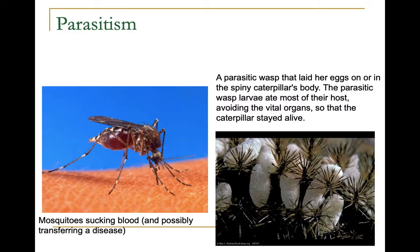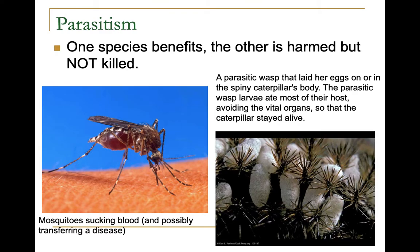Our last type of relationship is parasitism. Parasitism occurs when one species benefits and the other is harmed, but usually not killed — at least not right away. Common examples include mosquitoes and ticks. There's also a parasitic wasp that lays her eggs right against a caterpillar's skin — those white things are the wasp larvae, which gradually hatch and eat parts of the caterpillar for energy while avoiding the vital organs, keeping the caterpillar alive as an energy source until they're ready to hatch. Pretty creepy.